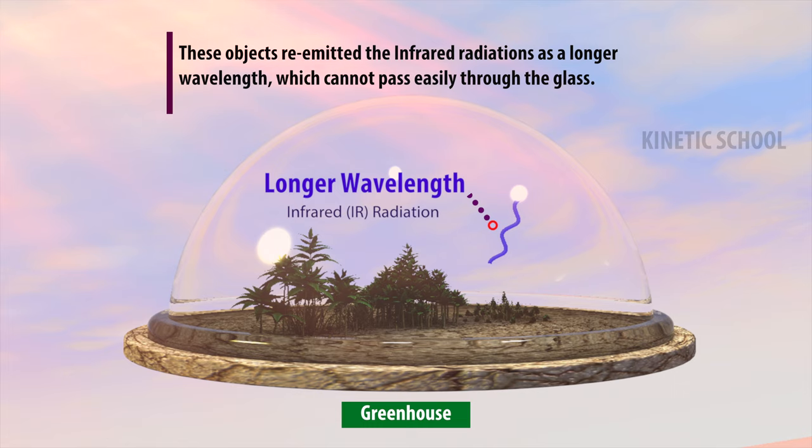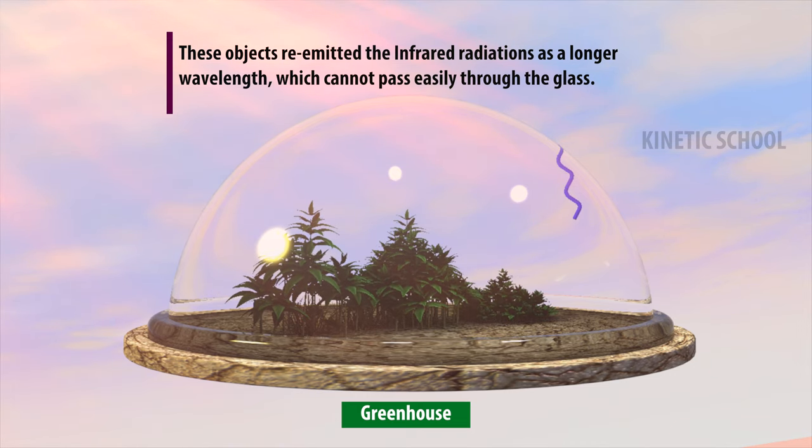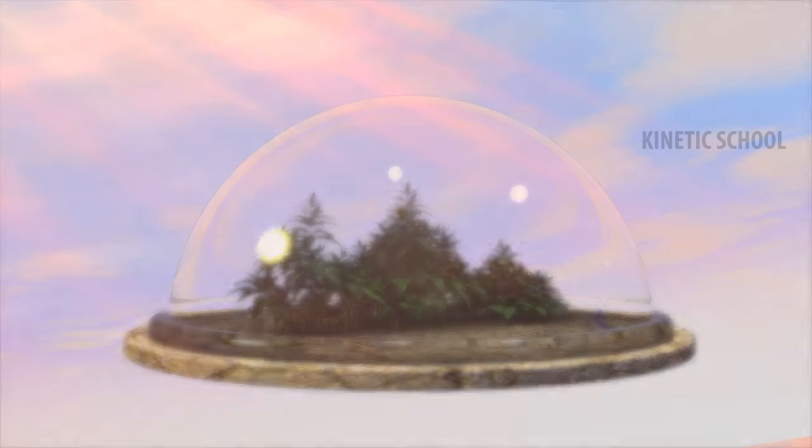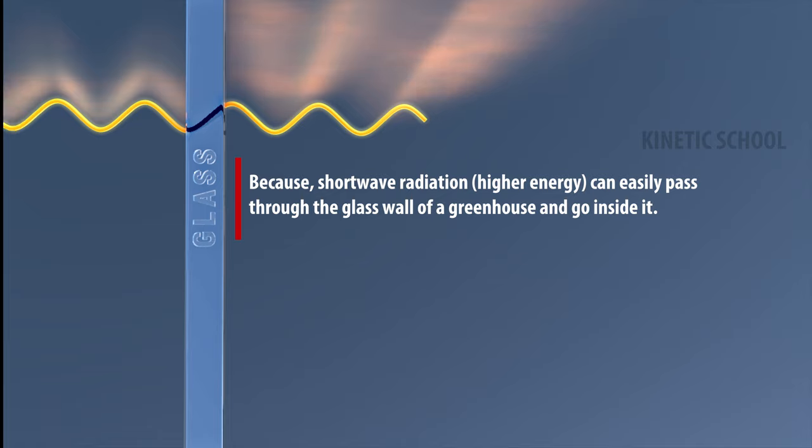These objects re-emit the infrared radiations as a longer wavelength, which cannot pass easily through the glass. Because shortwave radiation can easily pass through the glass wall of a greenhouse and go inside it.